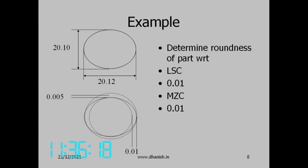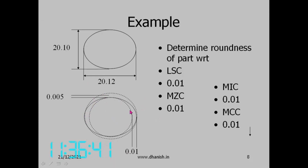With respect to the maximum inscribed circle the highest point will be 0.01 away, so the roundness error is 0.01. With respect to the minimum circumscribed circle — the outer one — this point is 0.01, so the roundness error with respect to minimum circumscribed circle is also 0.01.